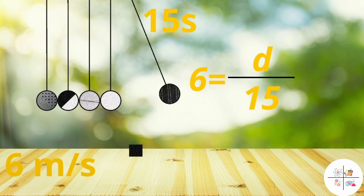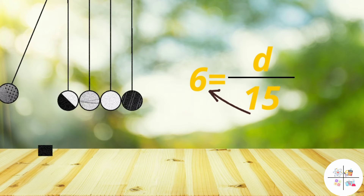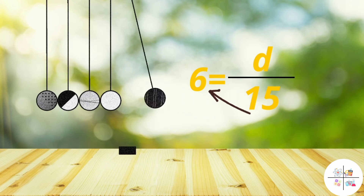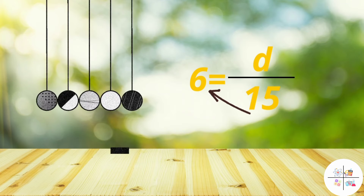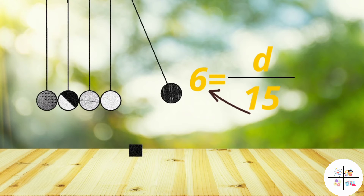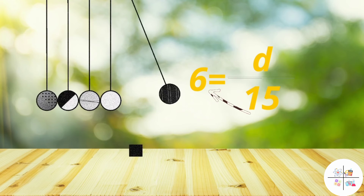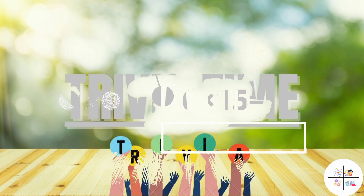Now, what if your question says to find the distance of a moving object that took 15 seconds at a speed of 6 meters per second? By using the same formula, just simply substitute the values given in your question: 6 equals d upon 15. Since 15 is dividing d, when it moves to the other side it will multiply, so 6 into 15 equals d, and 90 meters equals d. So our distance is 90 meters.